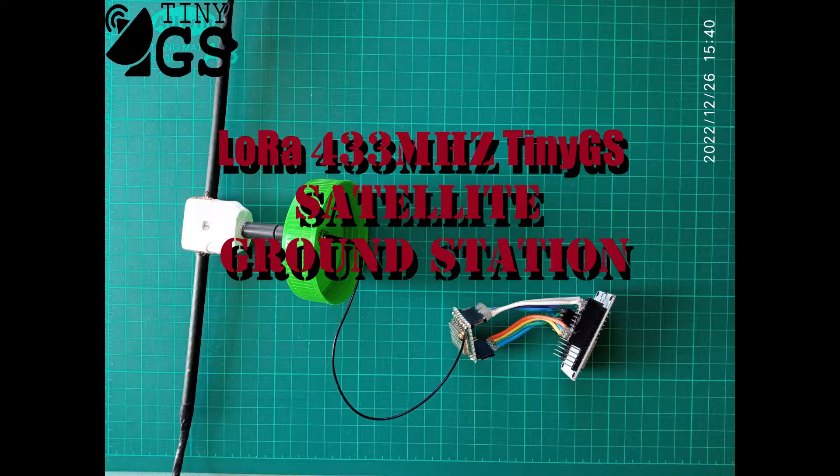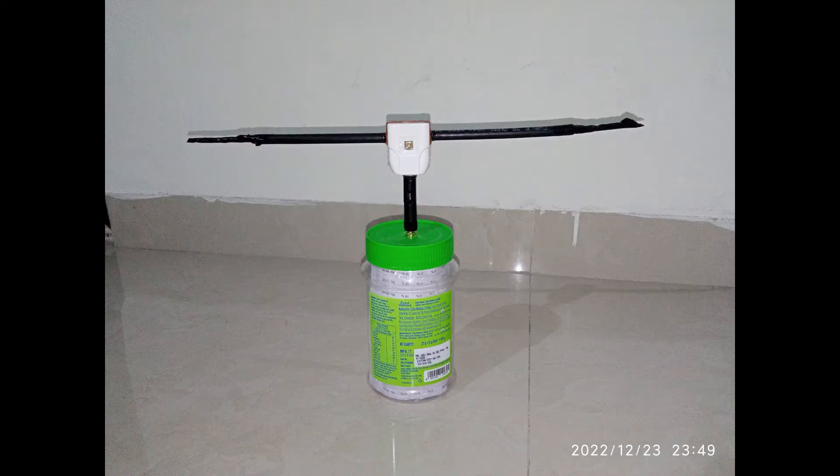Hello once again, welcome back to my channel, this is V3ZG Souraj here. Today we will be discussing TinyGS and LoRa satellites. TinyGS is an open network of ground stations distributed around the world to receive and operate LoRa satellites, weather probes and other flying objects.